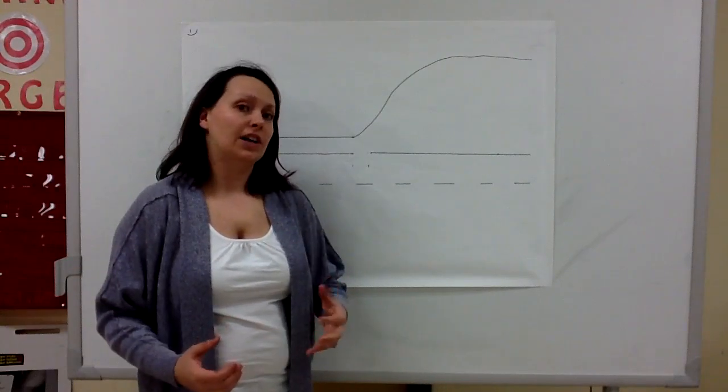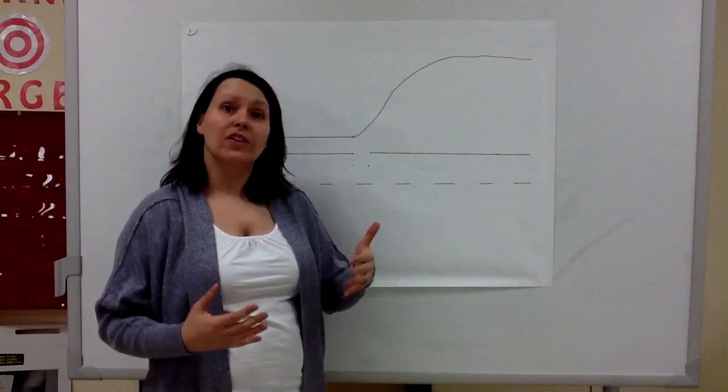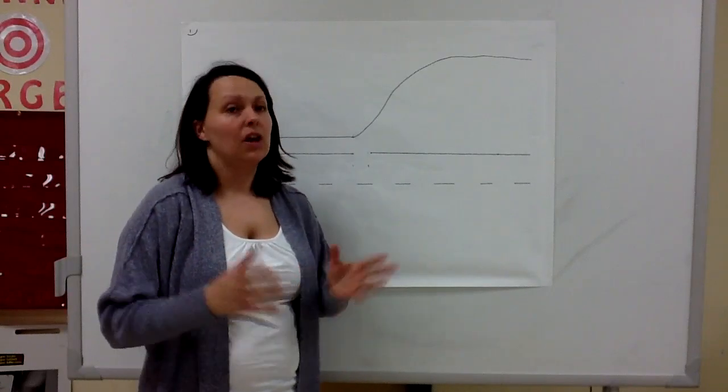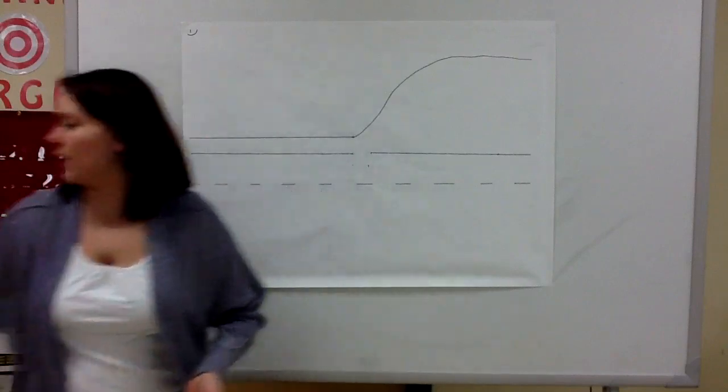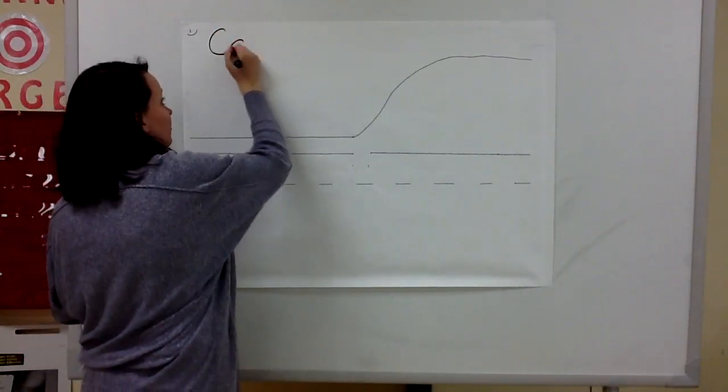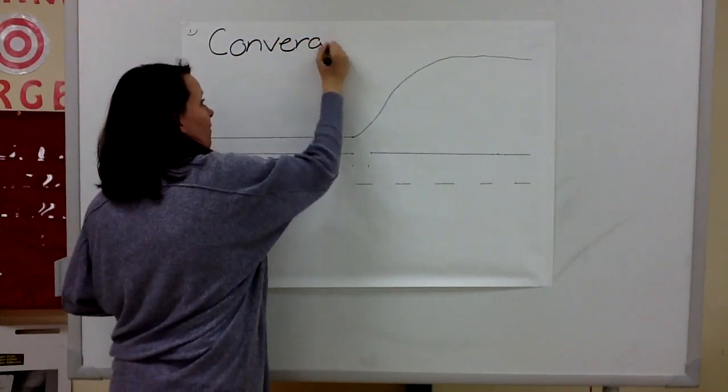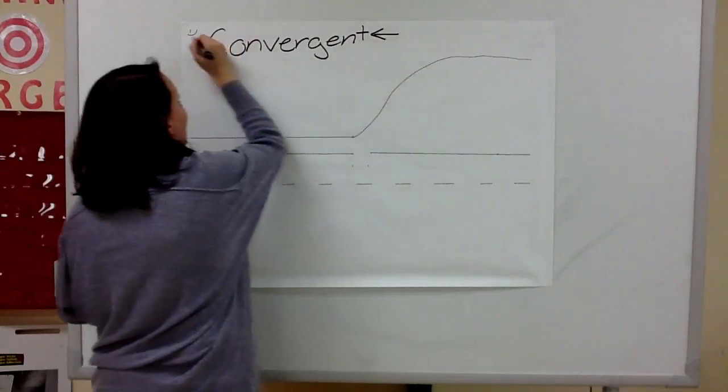In plate tectonics, we say that plates are sliding around. They're moving towards each other, they're moving away from each other. When they move towards each other, they collide. That creates a convergent boundary when plates collide.